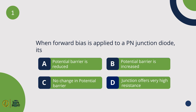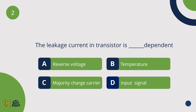When a forward bias is applied to a PN Junction Diode, its potential barrier is reduced. The leakage current in a transistor is temperature dependent.